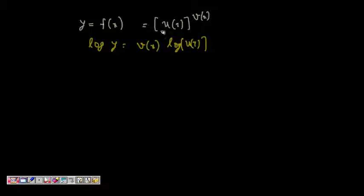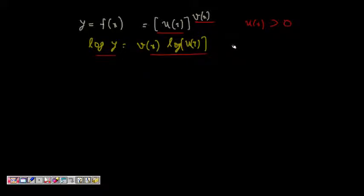If we have a function of the form u(x) to the power of v(x), where u(x) is always greater than 0, and we need to find f'(x), we can take log on both sides. It then becomes an implicit function, and we use the properties of implicit functions and derivatives to find the derivative.